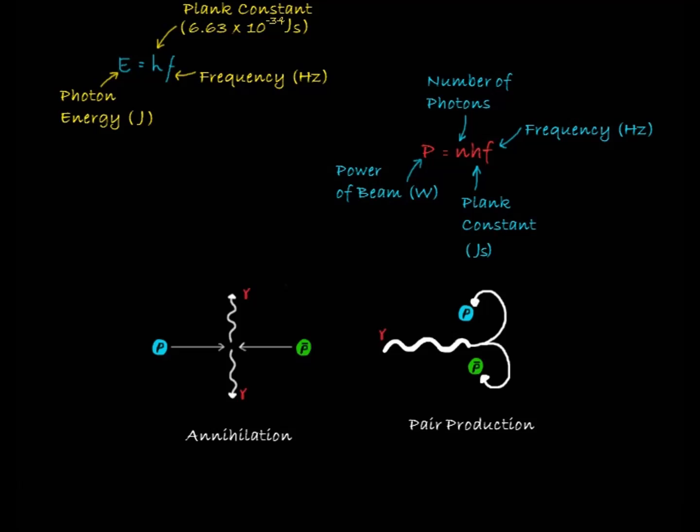Annihilation produces two photons. This means that the minimum energy of each photon is half the total rest energy of the particle and the antiparticle. In pair production the minimum energy of the photon needed is equal to the total rest energy of the particle and the antiparticle.